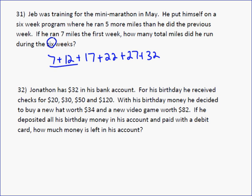You just add up 7 plus 12, which is 19, plus 17, which is 36. Plus 22 is 58, plus 32 is 90, plus 27 is 117. So in his 6-week training program, he ran 117 miles. Because it said for the total miles, that's why we added them.